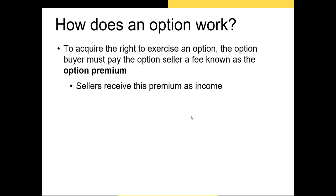Now if you want to buy an option, you'll have to pay a price. That price is called the option premium, or just premium. The seller of the option receives this cash immediately, but they're still party to the option contract. Selling an options contract is also known as writing an options contract.